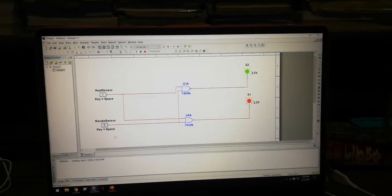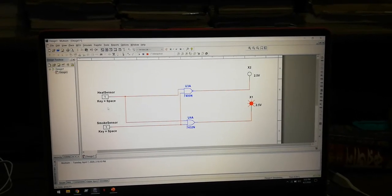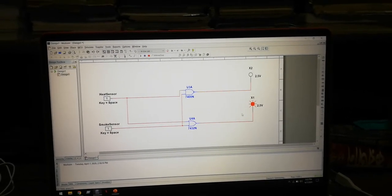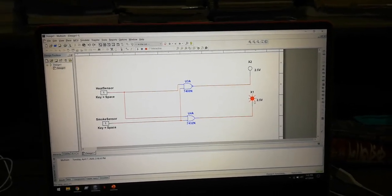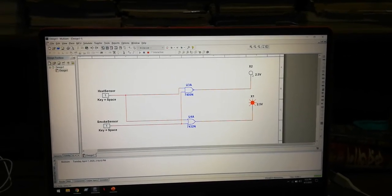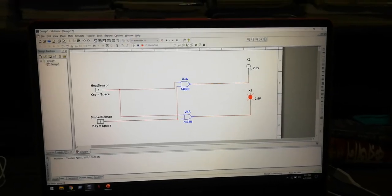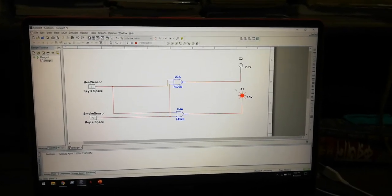But when we use both smoke sensor and heat sensor as one, then the red light is on and alarm buzzer sounds, but the green light is off, so the current is off. That's all, thank you.